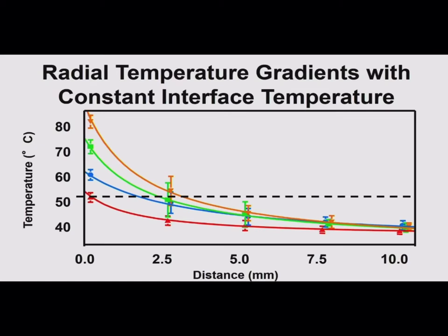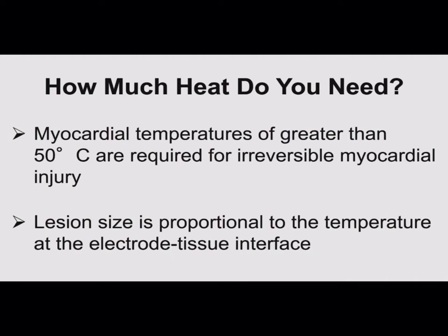Keep in mind that you're not measuring tissue temperature, and with most catheters you're not really measuring the electrode temperature — the thermistor is typically proximal to the electrode, so it underestimates the tissue temperature. That's why you won't choose 90 or 100 degrees; you'll generally choose 60 or 70 because you don't want to overheat the tissue. To emphasize: myocardial temperatures greater than 50 degrees are required for irreversible injury, and lesion size is proportional to the temperature at the electrode-tissue interface.